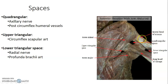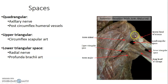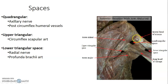Now you need to look. This is your humerus, this is the long head of triceps. Then this is your teres minor and this is your teres major — those are the boundaries. So what are the boundaries of the quadrangular space? The humerus, the long head of triceps, teres major below, and teres minor above.